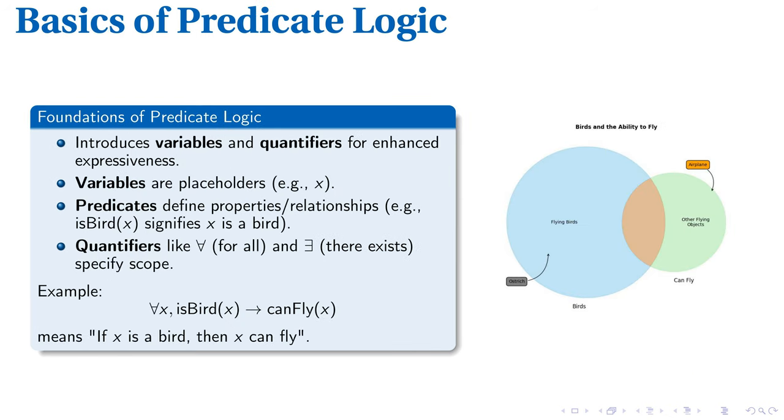Let's add more diversity to our assertions with variables such as x, standing in for any object or individual. Now we observe predicates like isBird(x), indicating that x is a bird. Here, predicate logic shines, enabling more specific, nuanced statements.